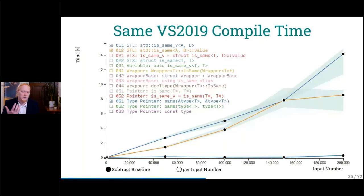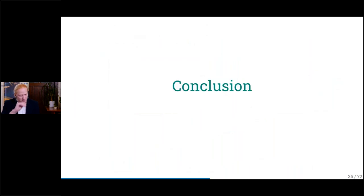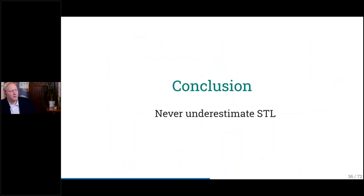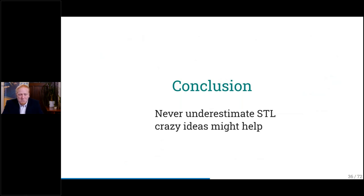Why is it faster? Because we don't create a type from that, and we don't create an integral constant type from that — we can just directly give a return value. We should not underestimate the STL because it can use compiler details we cannot know about, like these intrinsics. Sometimes crazy ideas might seem to work, even though they're crazy. Maybe we should look deeper.